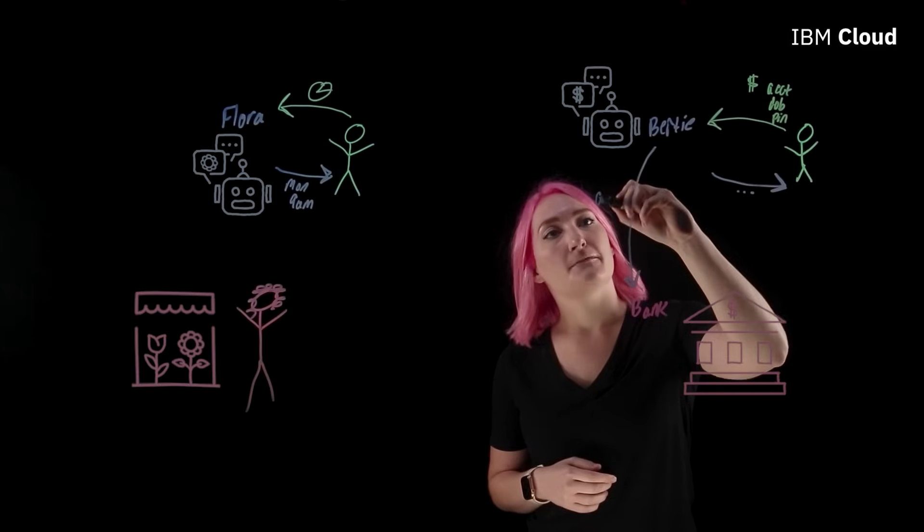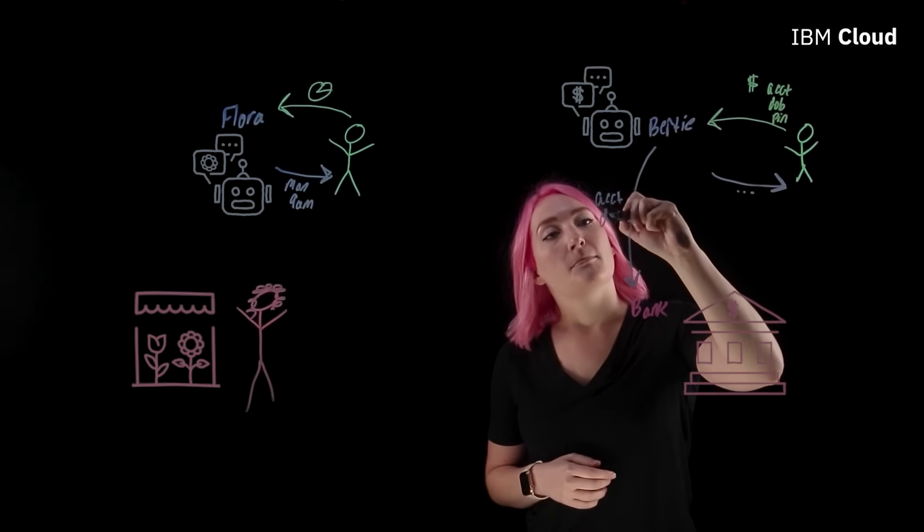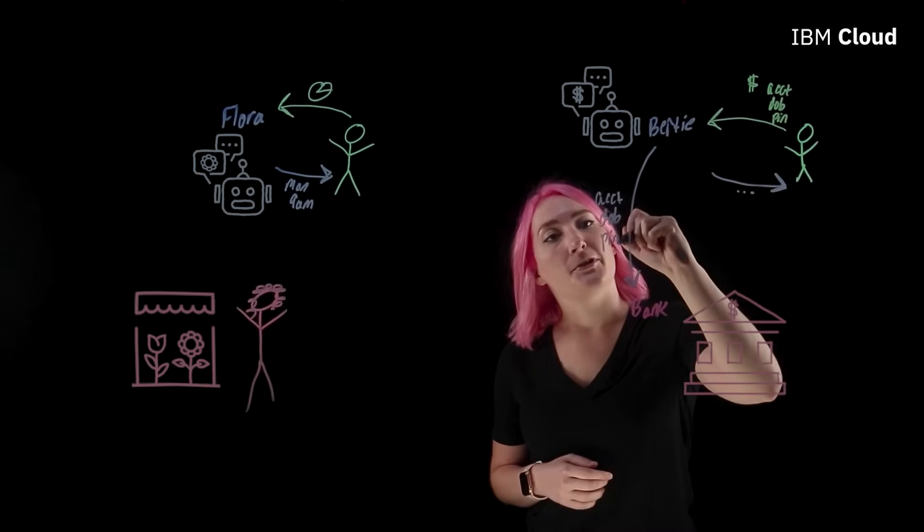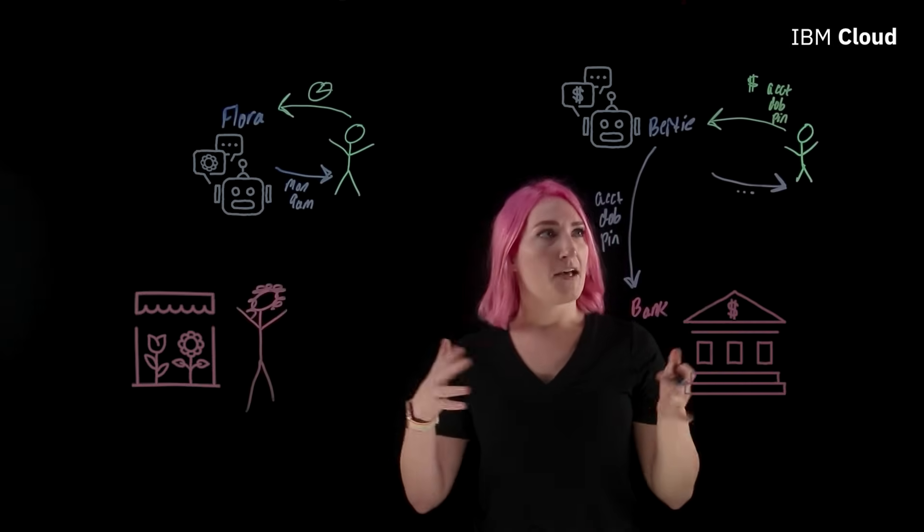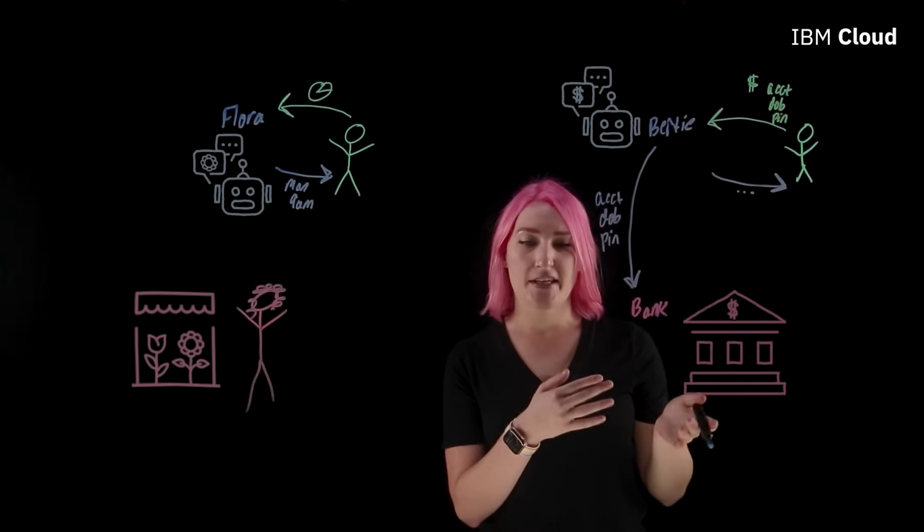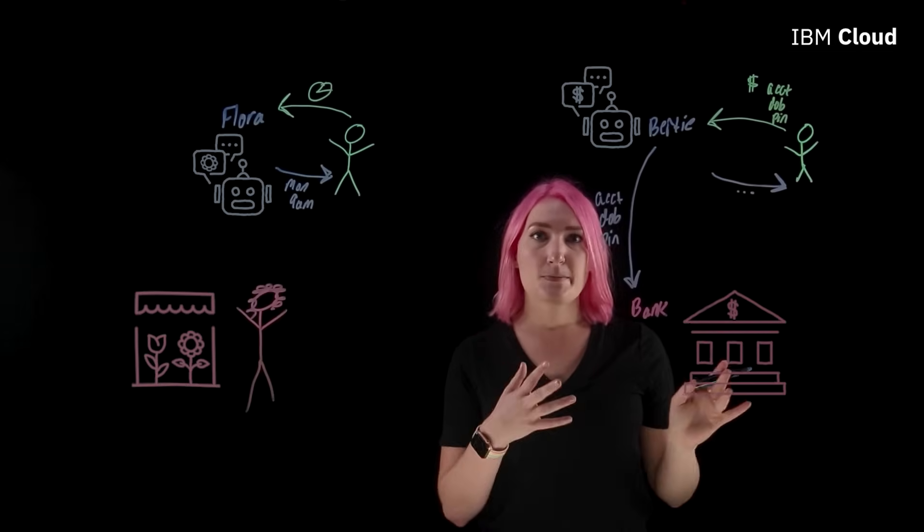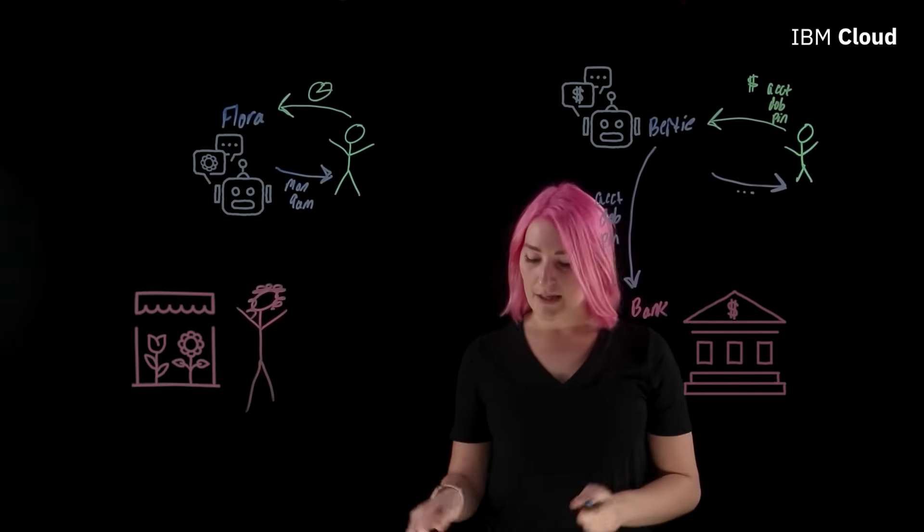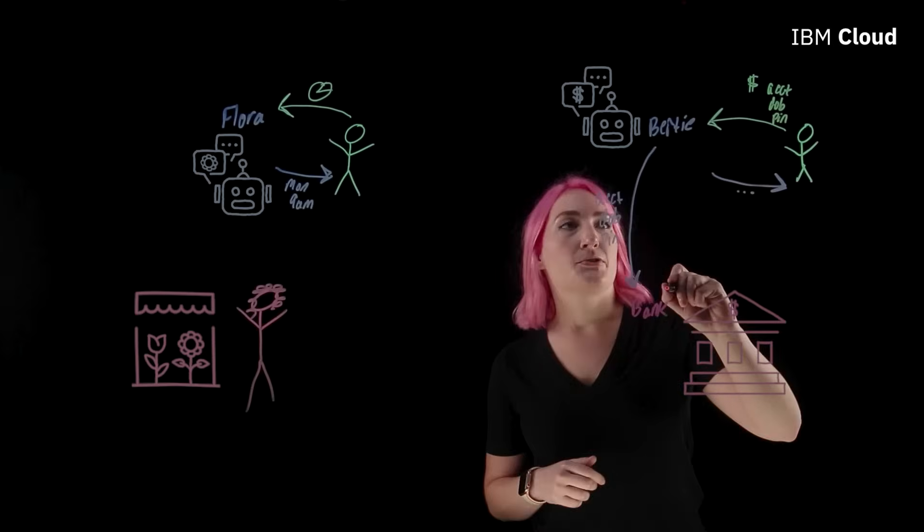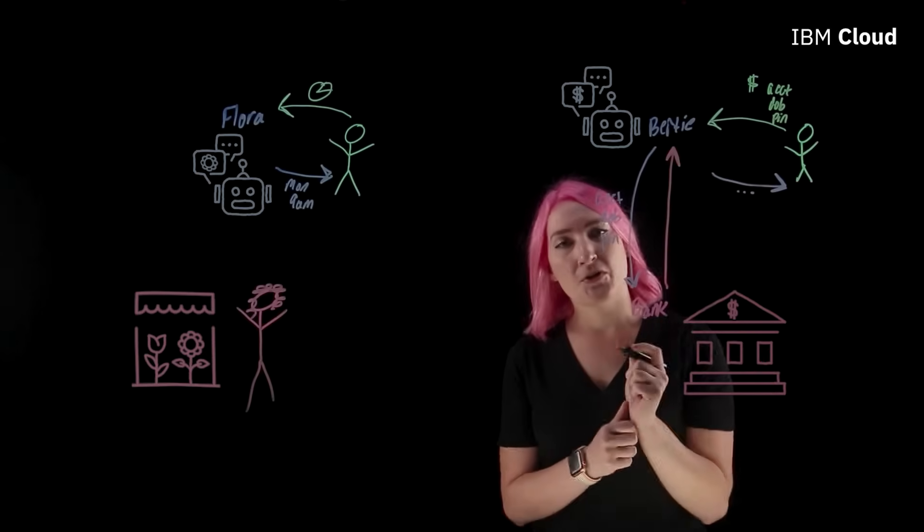From there, all without any tellers or any employees having to interact with Birdie, she's going to be able to go and ask the bank. She's going to pass along all this information, my account number, my date of birth, and my PIN number, and she's going to say, hey bank, how much money does this person have in their account? The bank is going to authorize me and say, okay, this is all the appropriate information that we need. The bank is going to respond with, I'm sorry, you only have five dollars.